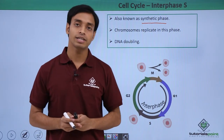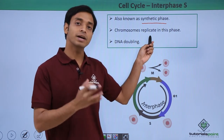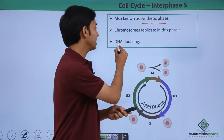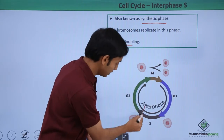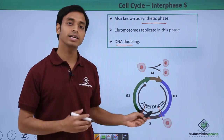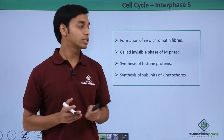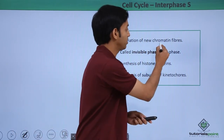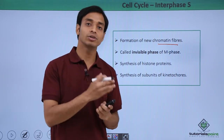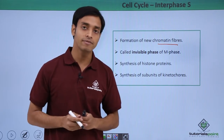In this phase, the chromosomes replicate and their amount increases. DNA doubling happens in this phase, which is known as the synthesis phase of the cell cycle. The S phase also involves the formation of chromatin fibers, which help in the segregation of chromosomes during the process of cell division that happens in the M phase.